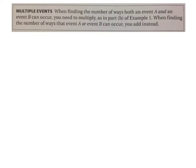Now we're going to figure out what to do if we have more than one event. If we are finding the number of ways that both an event A and an event B can occur, we have to multiply. If you are finding the number of ways that an event A or an event B could occur, you add instead. So if it's an AND, you're going to multiply, because the chances of things happening at the same time is less than the chances of A or B. That means we've got probabilities that we're adding together.